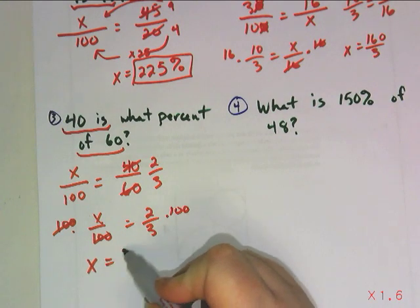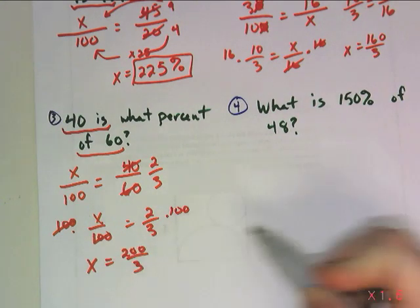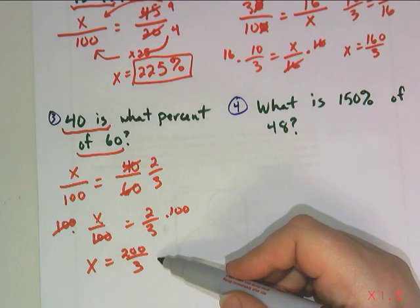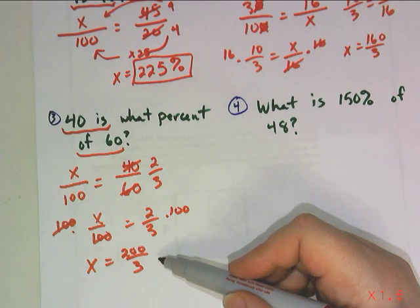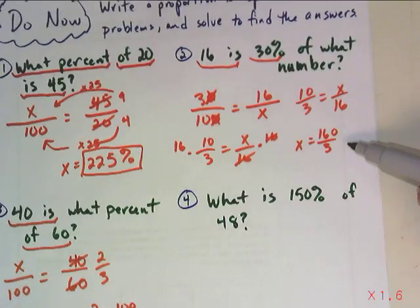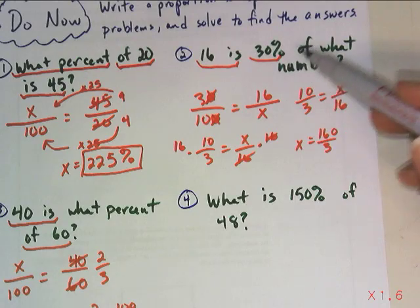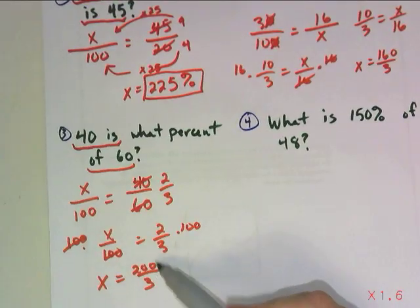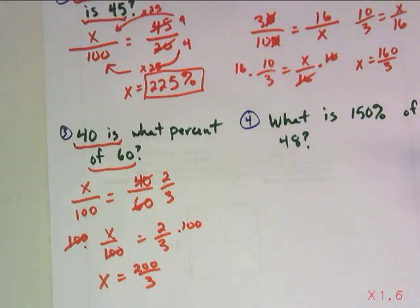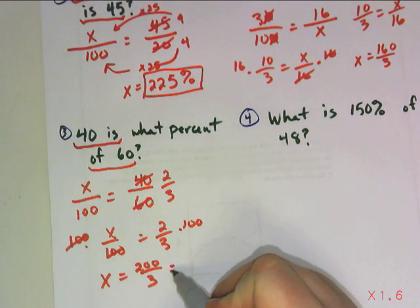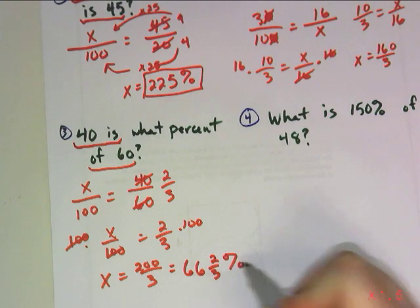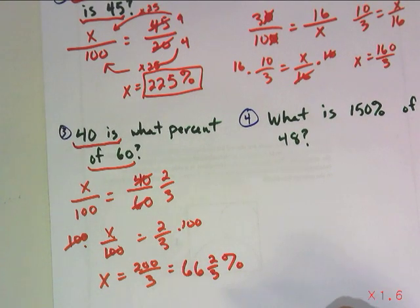That tells me that x is 200 over 3. Now, because I'm asking for a percent here, it's going to be better if we change this to a mixed number in this case. In number 2, up above, I went ahead and left this as an improper fraction, because that's not such a problem. 16 is 30% of 160 thirds. But it seems weird talking about 200 thirds percent. So let's change this to a mixed number. It's going to be 66 and 2 thirds. Don't forget your percent sign. Do not try to change this to a decimal.